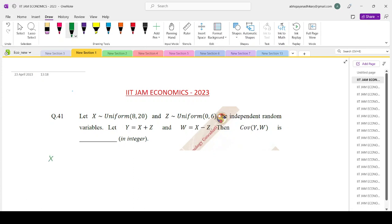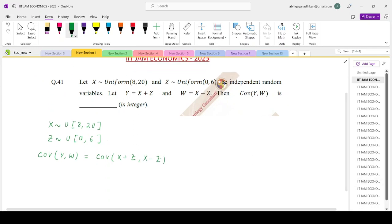Given X follows uniform (8,20) and Z follows uniform (0,6), the covariance between Y and W, where Y is defined as X plus Z and W is defined as X minus Z, would expand to variance of X minus covariance of X,Z plus covariance of X,Z minus variance of Z.